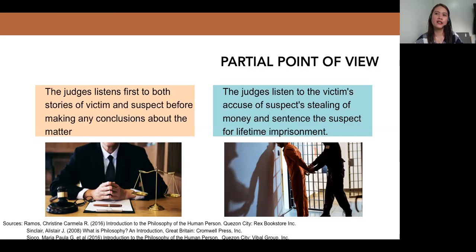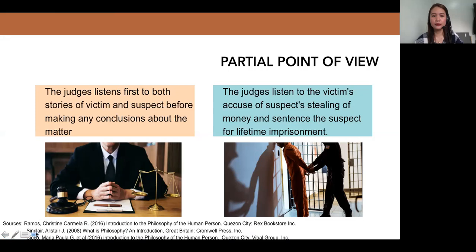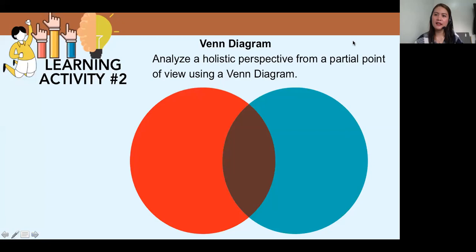That one has a holistic perspective and partial point of view towards you as a human being. For example, one, your family, your friends see you as a nice human being, that you are kind, that you are generous, while other people see you as bad, as maarte, mayabang, etc. Because they don't know who you are and the complete information about you. So, the holistic and partial point of view is very important to know.